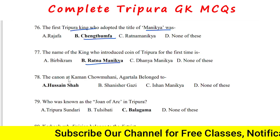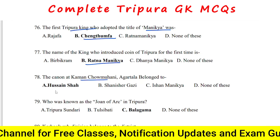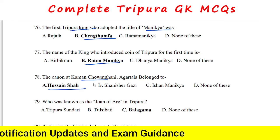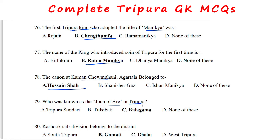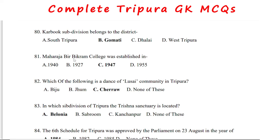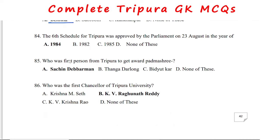The cannon in Kamanchamuni, Agartala, belonged to Hussain Shah and is presently kept in Rabindra Bhavan Park. The person known as the John Ray of Tripura is Balagama. Maharaja Birbikram College was established in 1947. The dance of the Lusai community in Tripura is Sharao. The Trishna sanctuary is located in the Belonia subdivision. The Sixth Schedule of Tripura was approved by Parliament on 23rd August 1984.